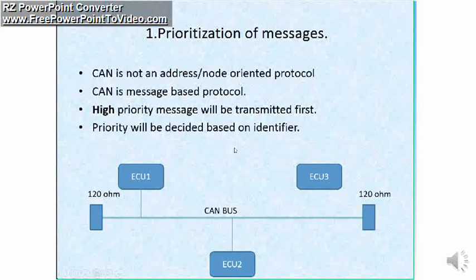And you can see the short notes on CAN prioritization of messages properties. CAN is not an address or node-oriented protocol. CAN is a message-based protocol. High priority messages will be transmitted first. The priority is decided based on the identifier.